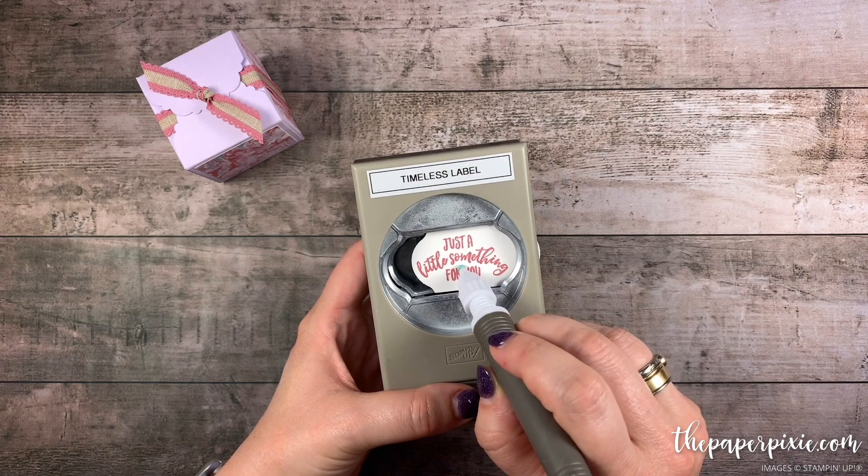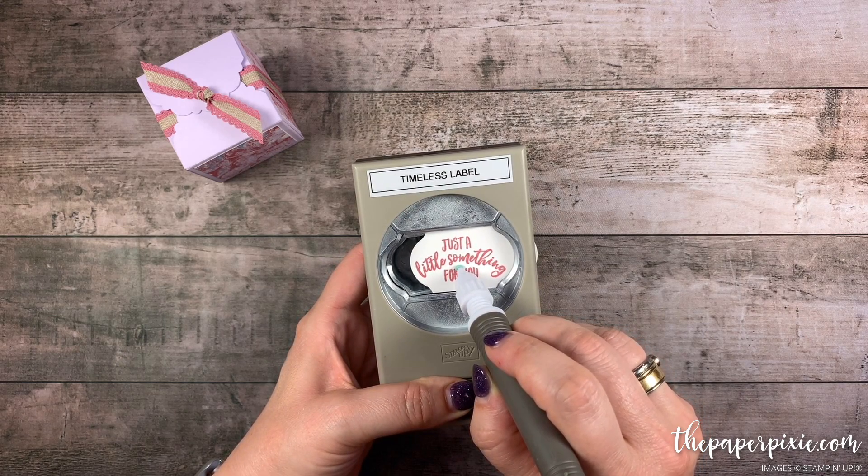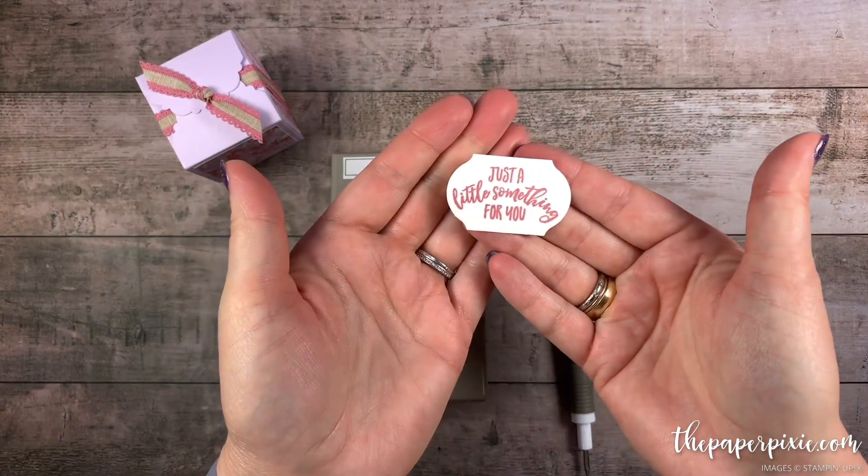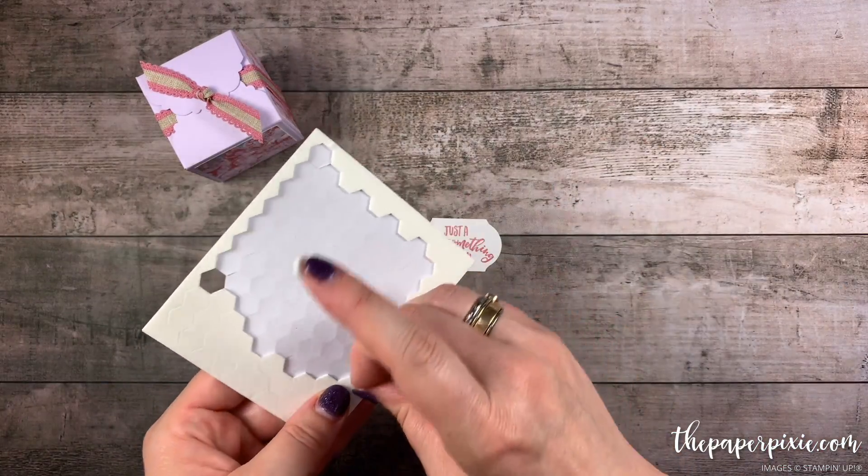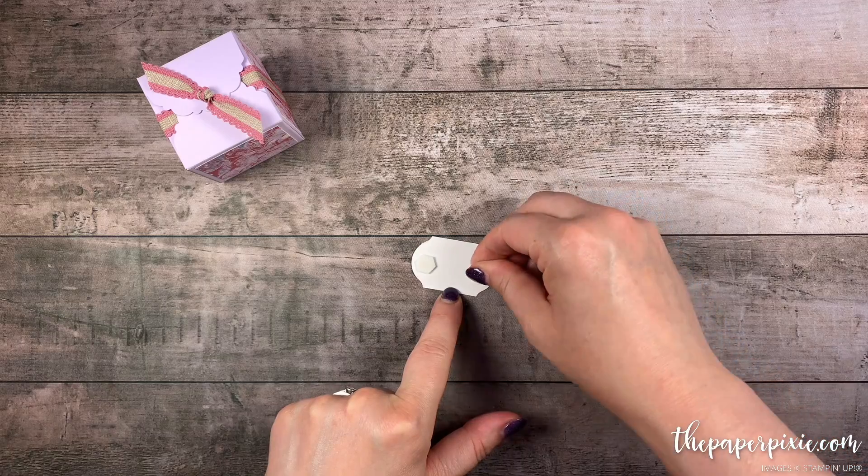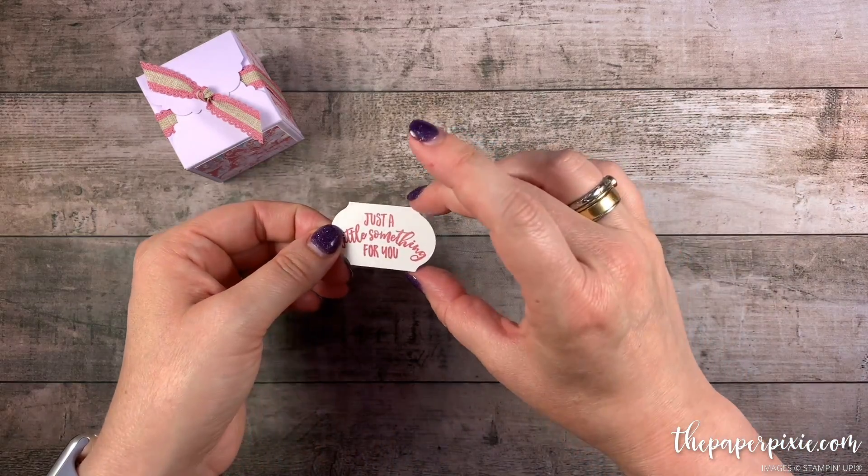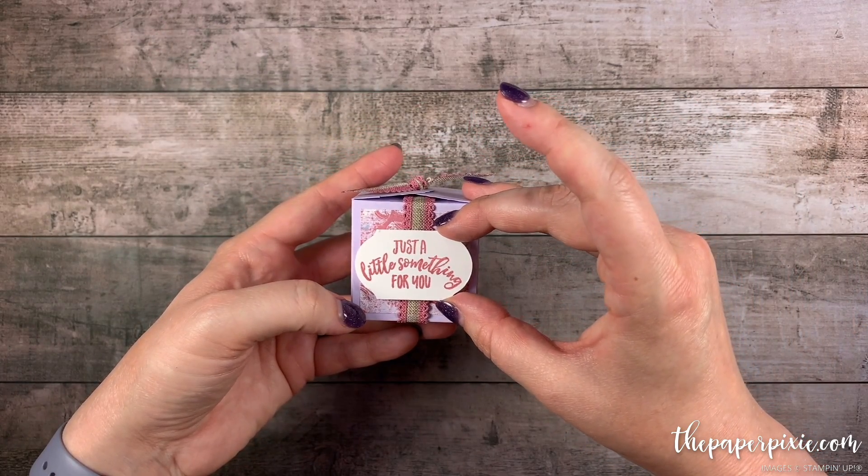It grabs hold of that punch just enough. I can move things around as needed and then I'll punch. And look we've got a tiny Timeless Label Punch. I'm just going to grab a couple of dimensionals. And I'm going to put them on the outside edges of this label so that the ribbon can still slide behind the sentiment. We'll go ahead and place that on the front of our box.